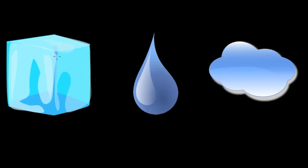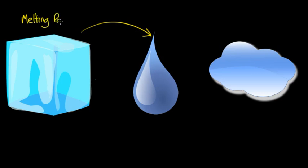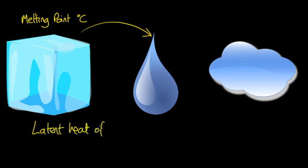The energy needed to break solid bonds and form a liquid, when we are at the melting point of that solid, that energy that we put in is called the latent heat of fusion. We need to put the energy in to break the solid bonds and they form weaker liquid bonds.